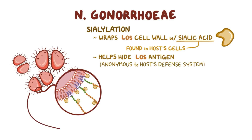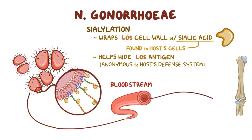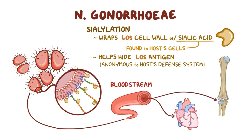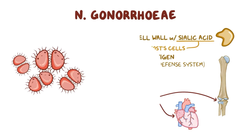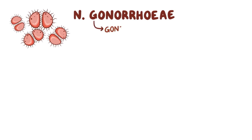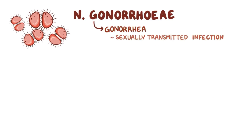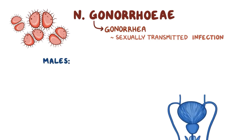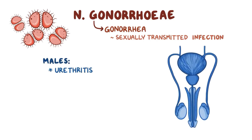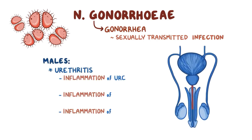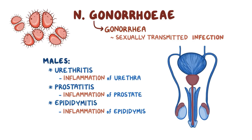As if it wasn't enough, N. gonorrhoeae can spread from the bloodstream to other parts of the body, like the joints or the heart. Most frequently though, N. gonorrhoeae causes gonorrhea, which is a sexually transmitted infection. In males, gonorrhea manifests as urethritis, or inflammation of the urethra, but it can also affect the prostate, causing prostatitis, or the epididymis, causing epididymitis.